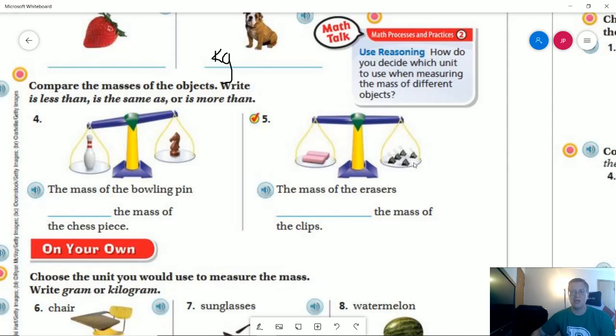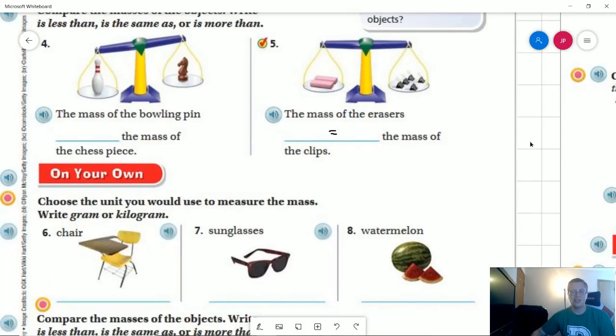Number five. So the mass of the eraser. It looks like from my perspective that both of these would be considered equal. So we could say the mass of the erasers equals, and I'm just going to use the equal sign to save time. You could use the word, the mass of the clips.